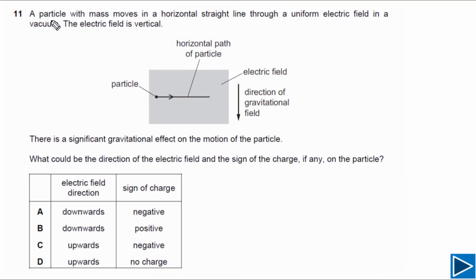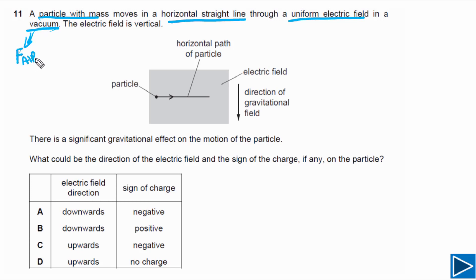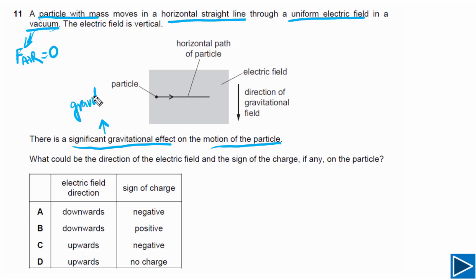For question number 11, a particle with mass moves in a horizontal straight line through a uniform electric field in a vacuum. In a vacuum simply means we can ignore air resistance, so air resistance is equal to zero. It is also given that there is a significant gravitational effect on the motion of the particle, meaning we cannot ignore gravity and must consider its effects in our calculations.